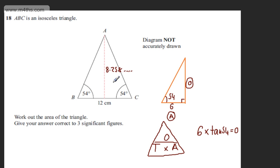So we found this height. I'm going to write therefore the area of the triangle will be equal to one half times the base which is 12 times the perpendicular height which is 8.258 dot dot dot that's stored in my calculator.